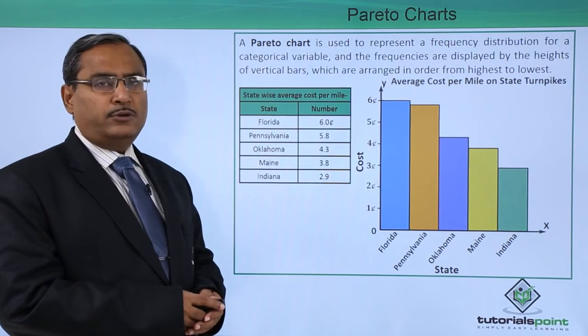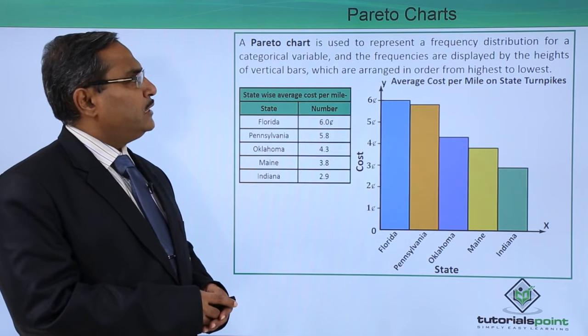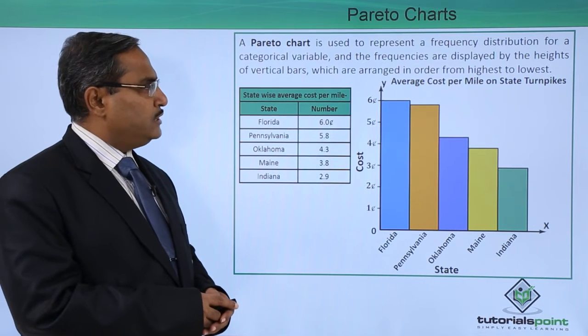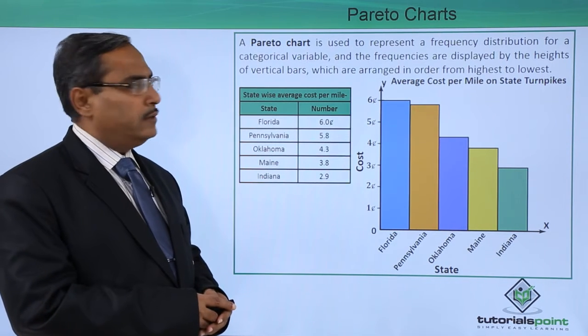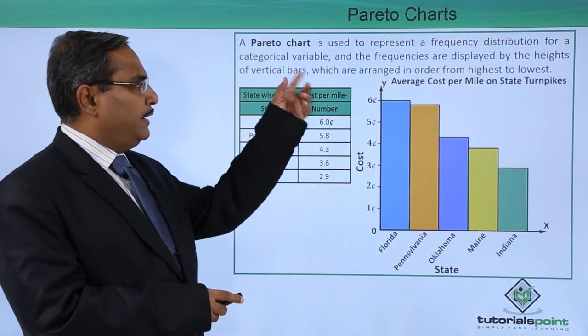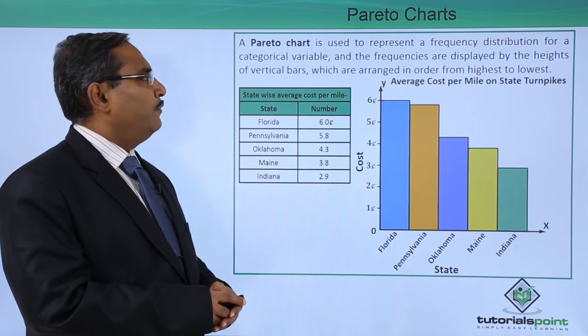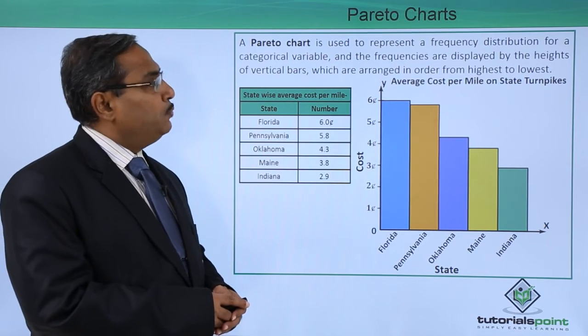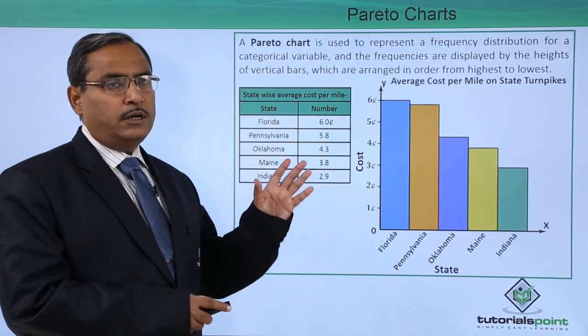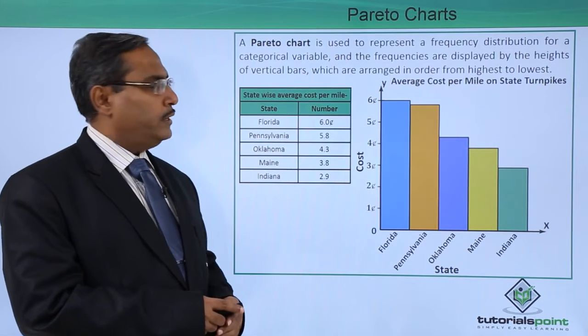Next we are going for the Pareto charts. A Pareto chart is used to represent a frequency distribution for a categorical variable, and the frequencies are displayed by the heights of the vertical bars, which are arranged in order from highest to lowest. That is very important.